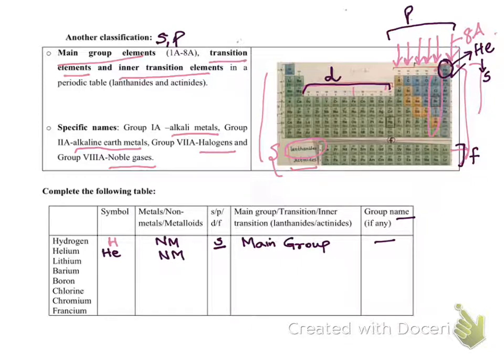s, p, d, or f? And we already said helium is s-block. It's in the 8A group. 8A group elements are known as noble gases.